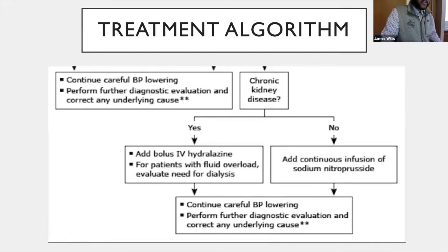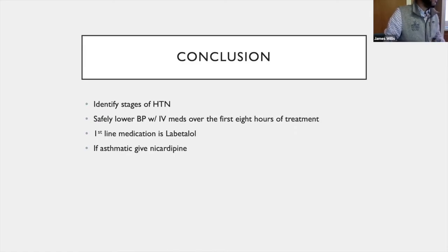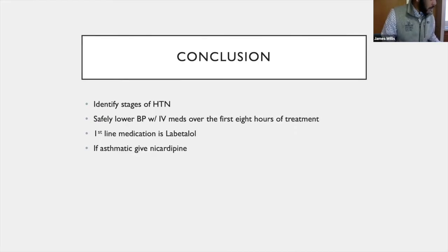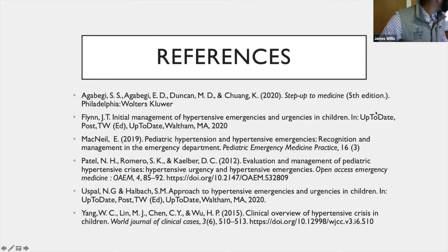In conclusion, identify the stage of hypertension. For adolescents and teenagers, the threshold is generally a systolic blood pressure of 180 over 120. Identify any end organ damage, and treat with IV medication over the first eight hours, aiming to lower blood pressure by 25%. First-line medication is labetalol; for asthmatic patients, use nicardipine.